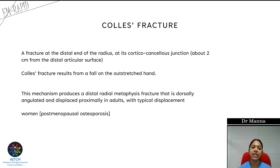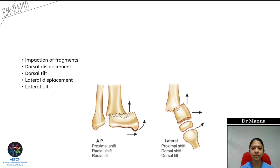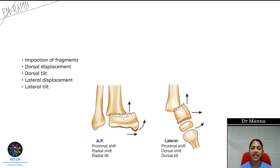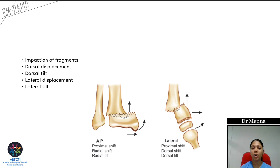Colles' fracture is usually seen in postmenopausal women because of osteoporosis. On the AP view, the fracture segment is proximally shifted with radial shift and radial tilt. On the lateral view, the proximal shift and dorsal tilt can again be seen clearly on X-ray.